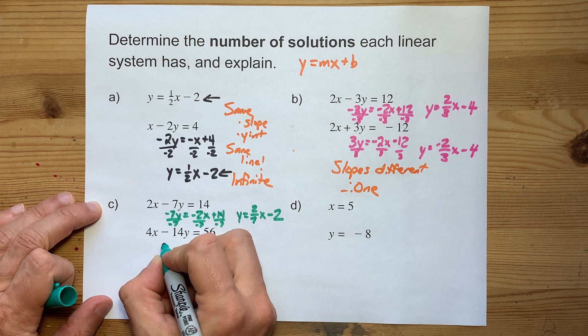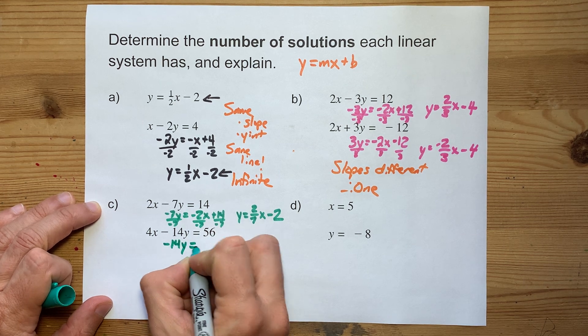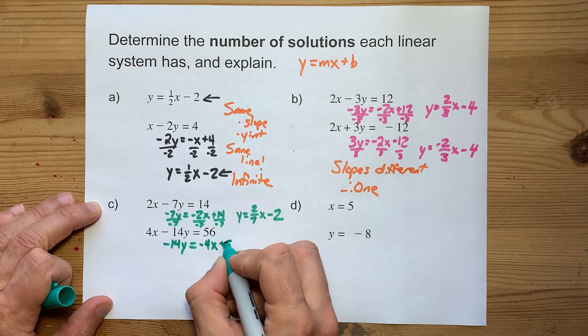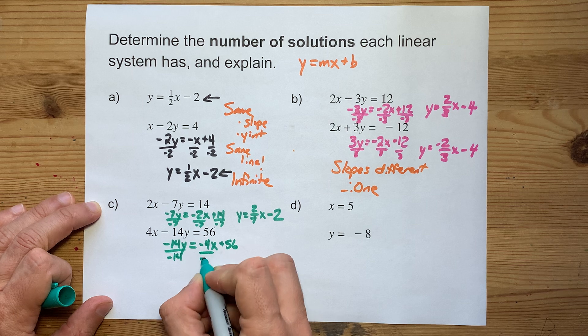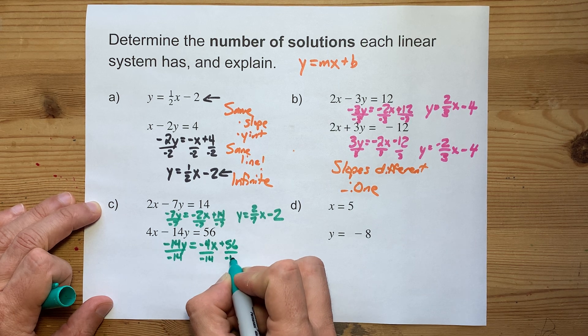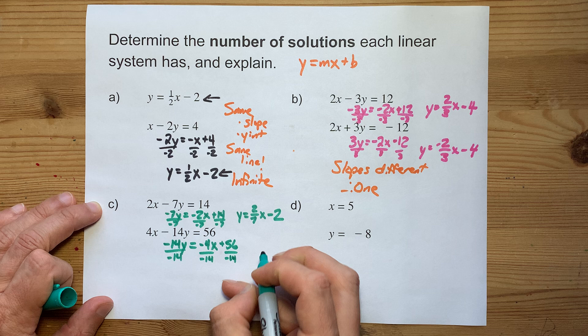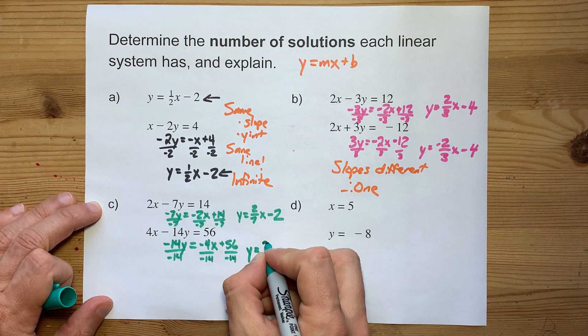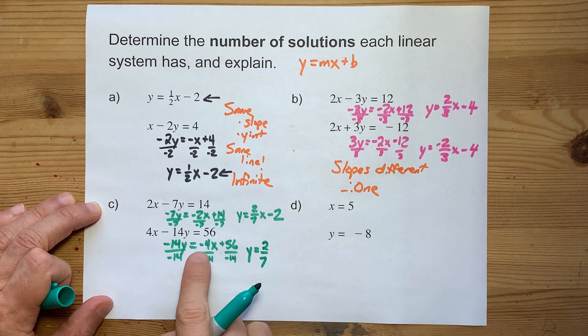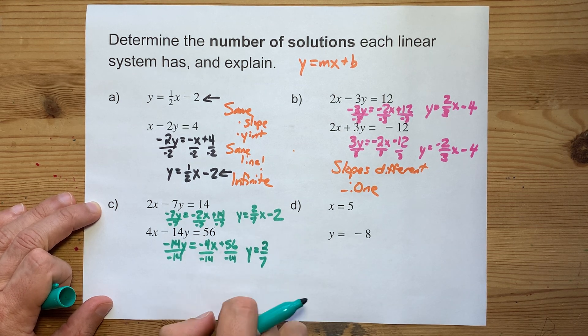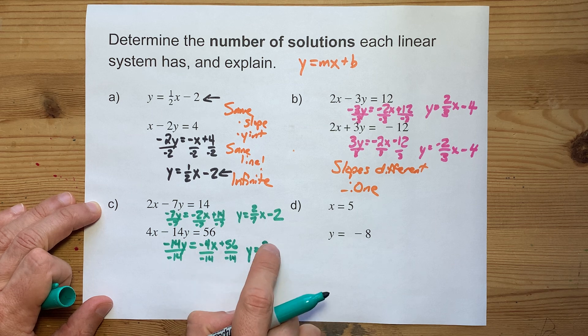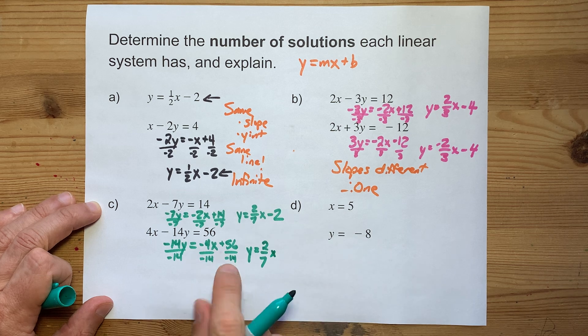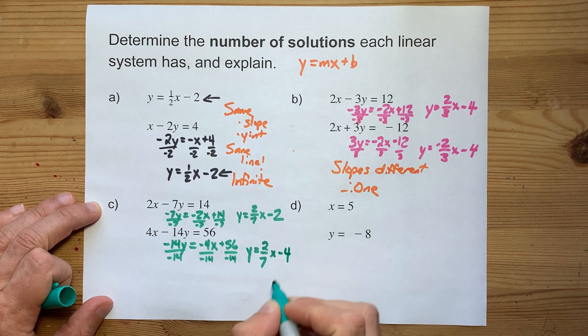I'm going to do the same thing here. Minus 14y stays on the left. Minus 4x flips to the right. And if I divide everything by negative 14, I'm going to end up with, well, these cancel. That's y. Negative 4 over negative 14 reduces to positive 2 over 7. The negatives cancel, and they're both divisible by 2. 4 divided by 2 is 2. 14 divided by 2 is 7. And 56 divided by negative 14 is minus 4.